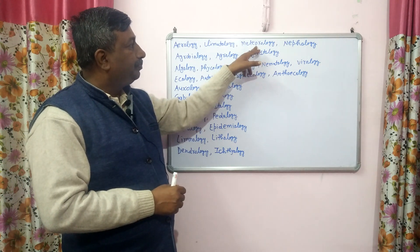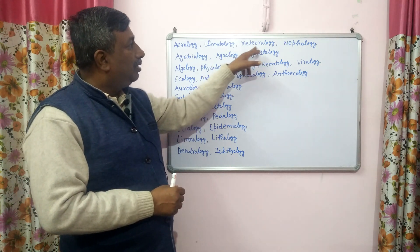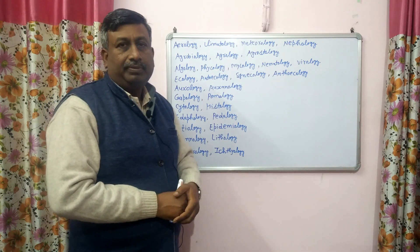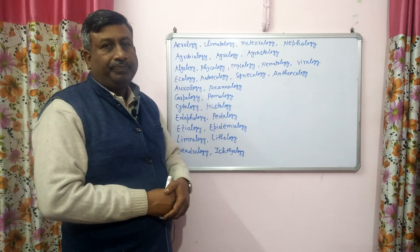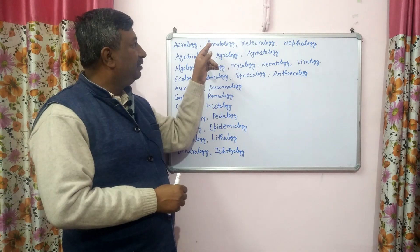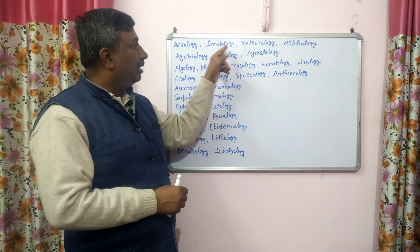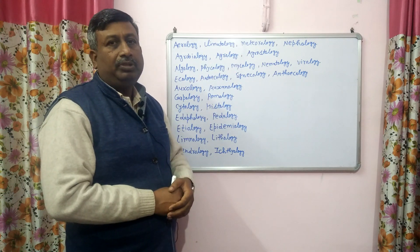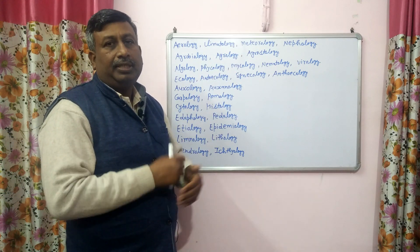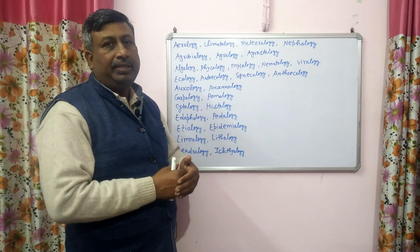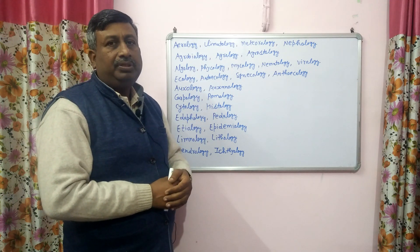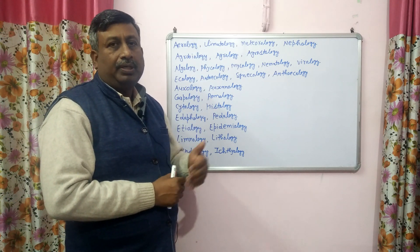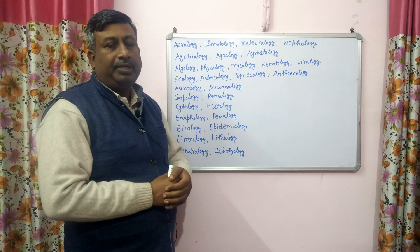Then meteorology, which is related with the weather — it is the study of weather. So this is the difference between climatology and meteorology. In meteorology, we study about weather conditions: temperature, rainfall, etc. While in climatology, we study about the climate types — tropical, subtropical, temperate.